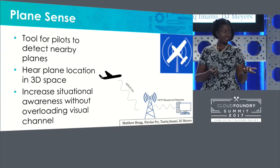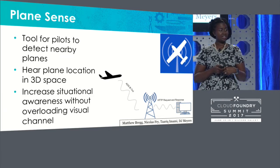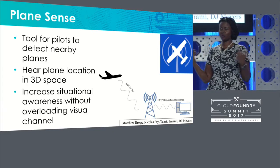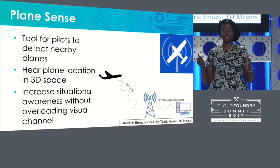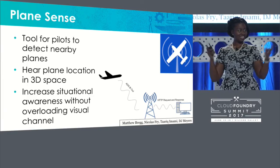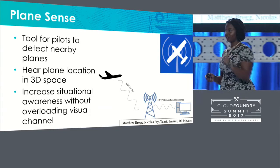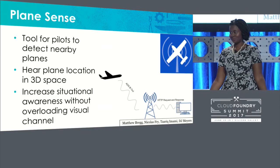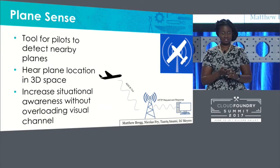Another project is similar but in the aviation domain. It's called Plane Sense and we use an open source project called Stratix, which is an open source aviation traffic and weather tool. We use the traffic portion to allow pilots to not have to look down at their instrumentation as much to figure out the proximity of other aircraft. Pilots can hear sounds in 3D space that relate to the proximity of other aircraft, increasing their situational awareness without overloading their visual channels. If you've seen a cockpit, there are a thousand different panels and gauges — why add another one when you can utilize the ears?